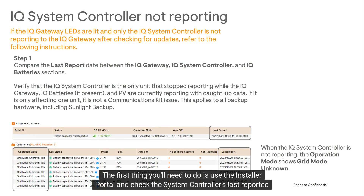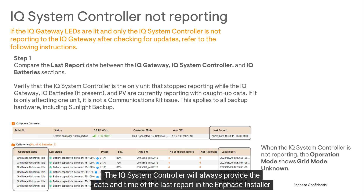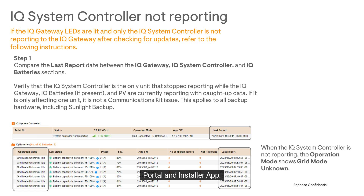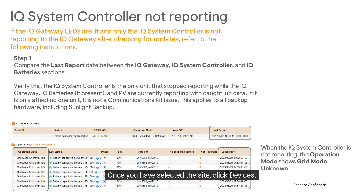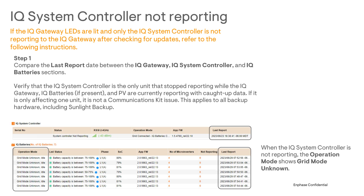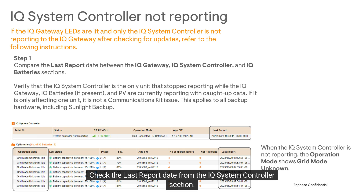The first thing you'll need to do is use the installer portal and check the system controller's last reported timestamp. The IQ system controller will always provide the date and time of the last report in the Enphase installer portal and installer app. To view this information in the Enphase installer portal, log in and search for the affected site. Once you have selected the site, click Devices. Check the last report date from the IQ system controller section.